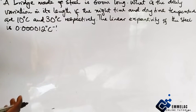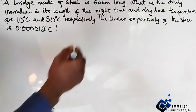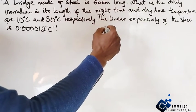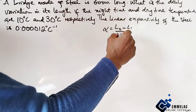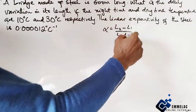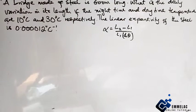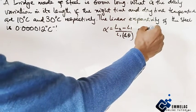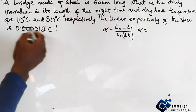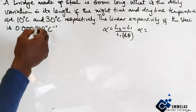Now let's look at this. We know that the linear expansivity is α = (L₂ - L₁) / (L₁ × ΔT). From here, we see that the linear expansivity given is 1.2 × 10⁻⁵.